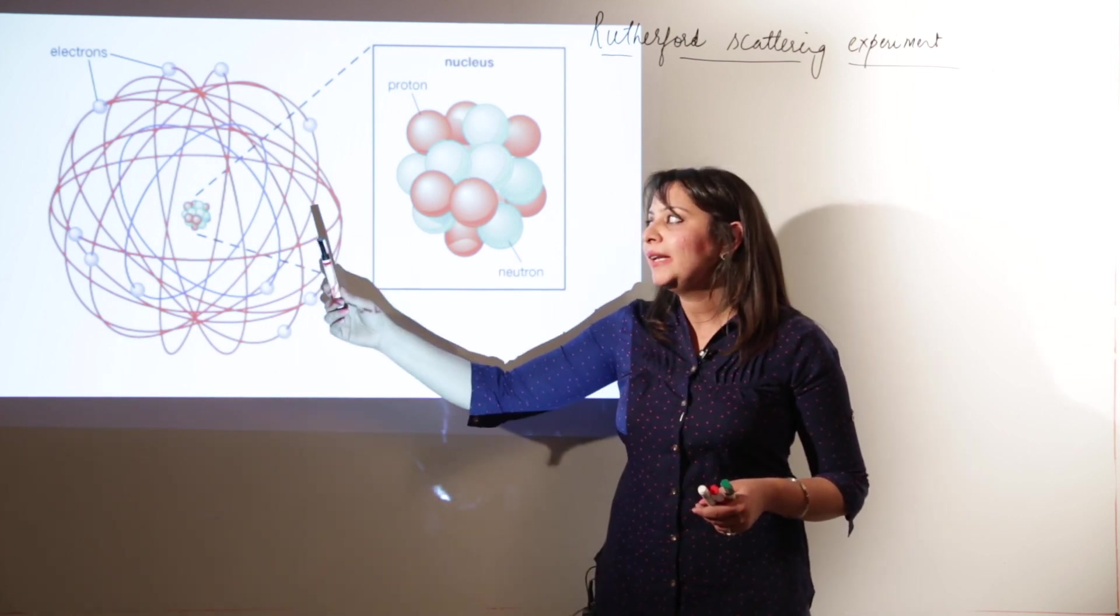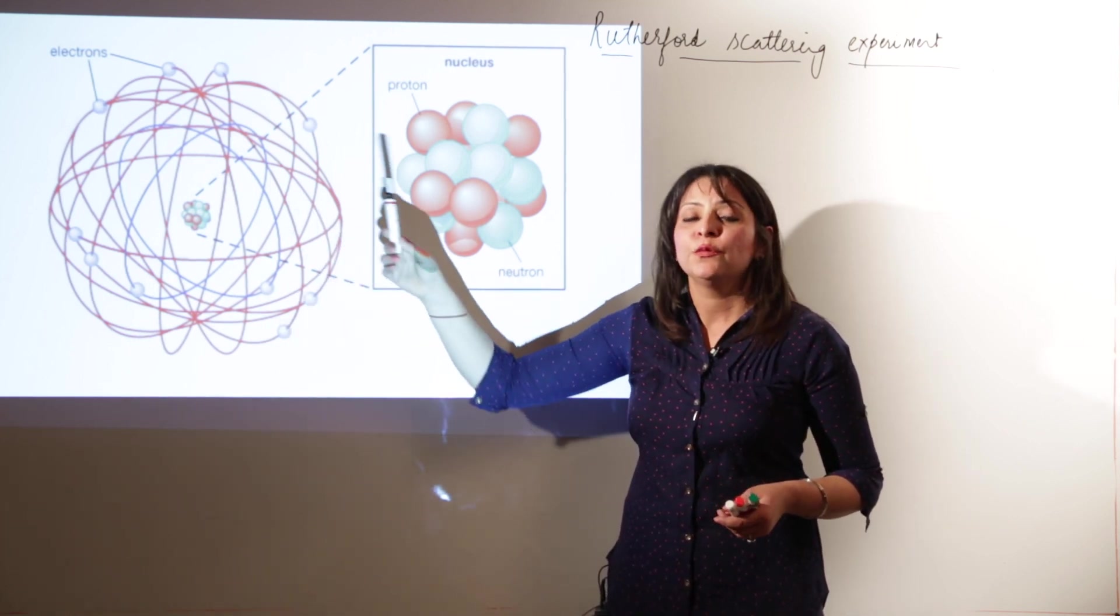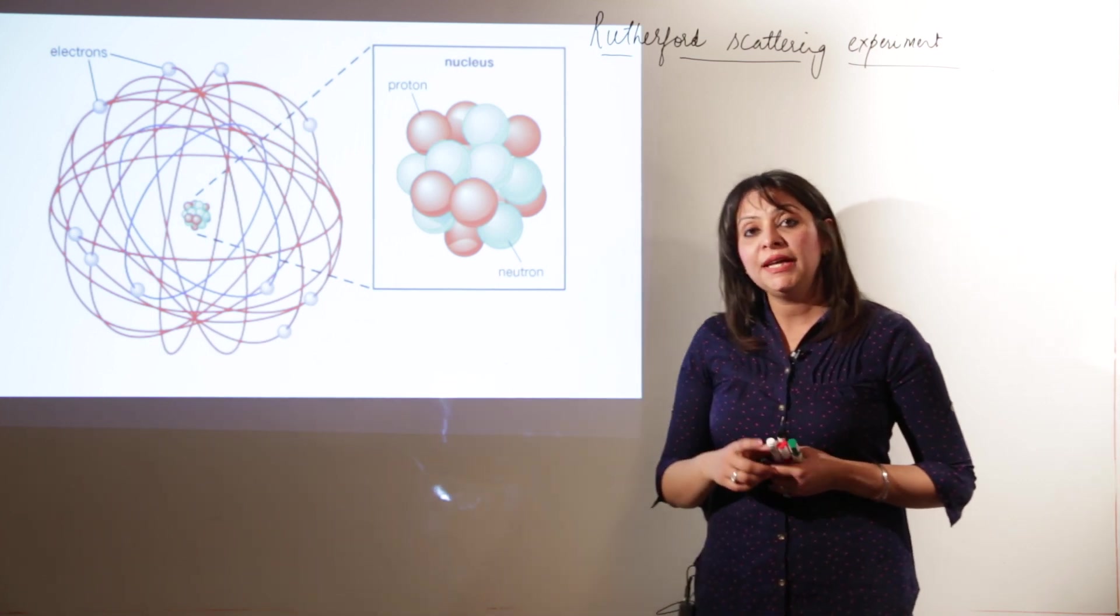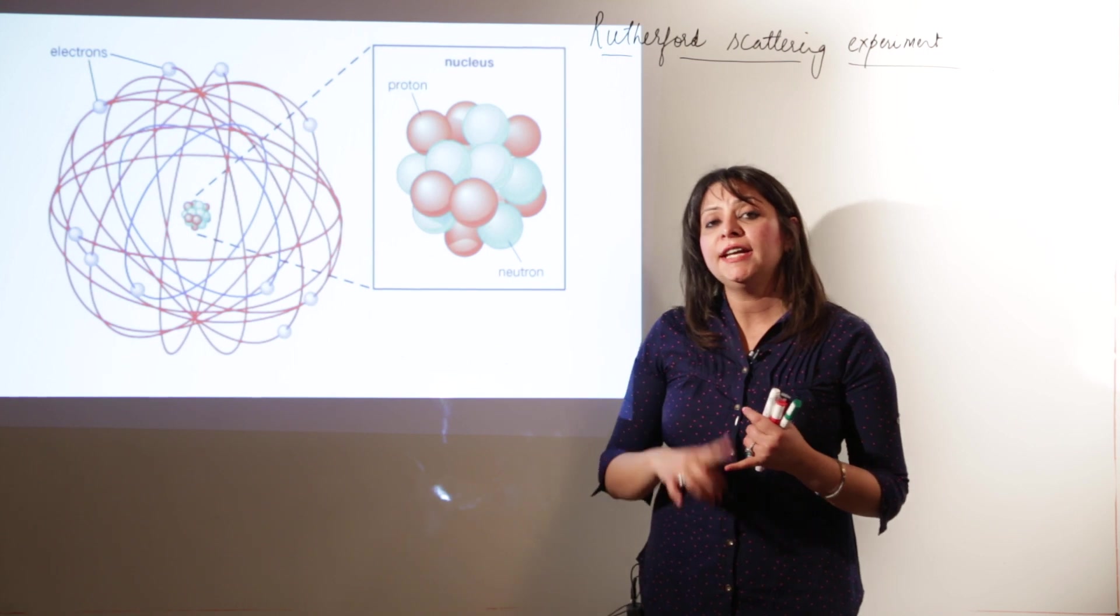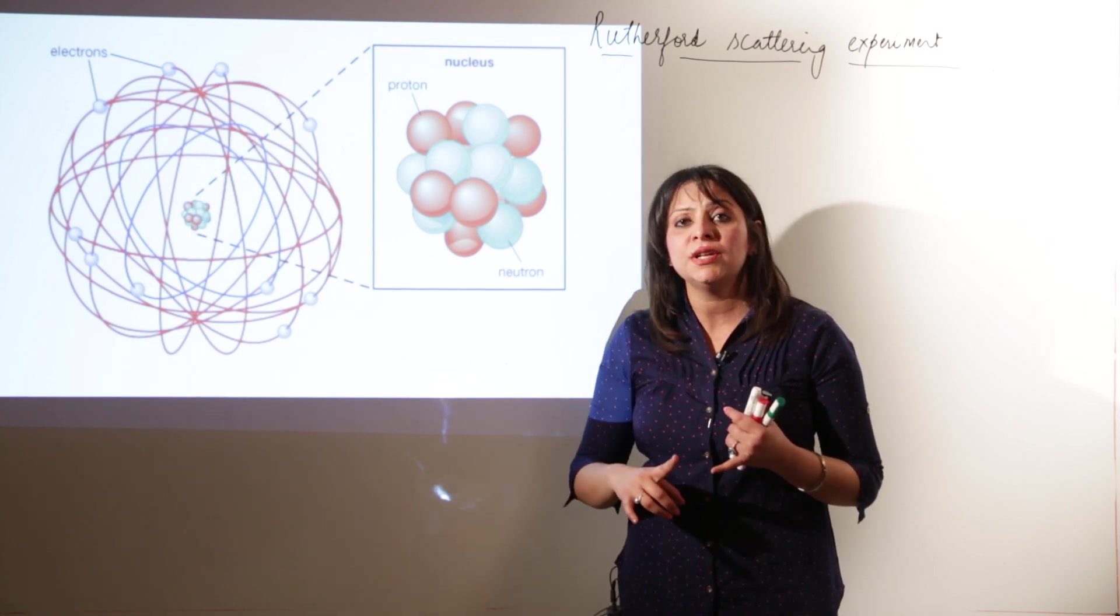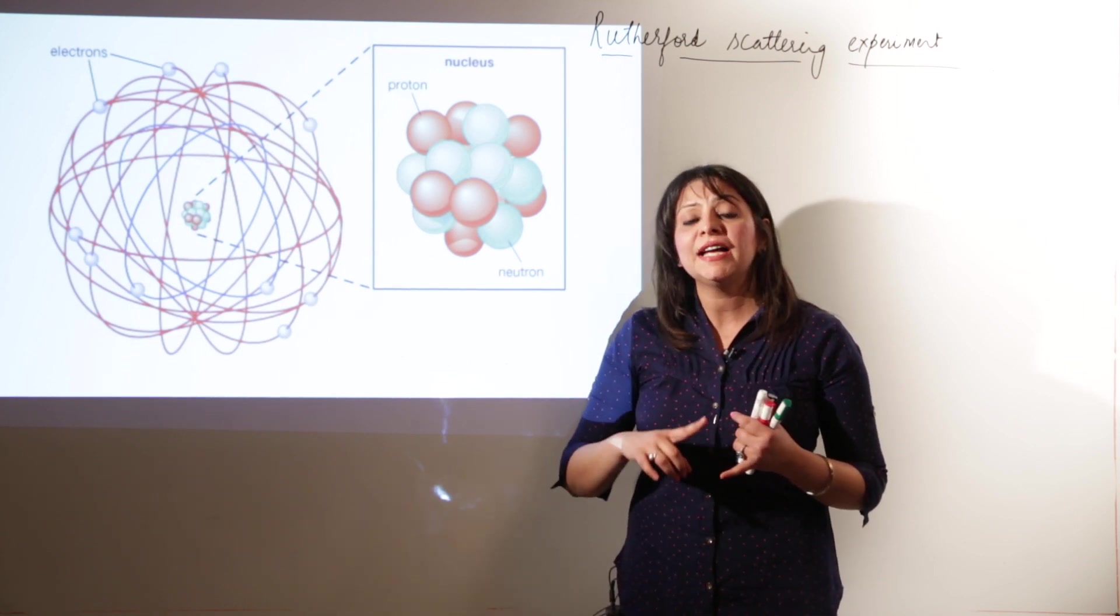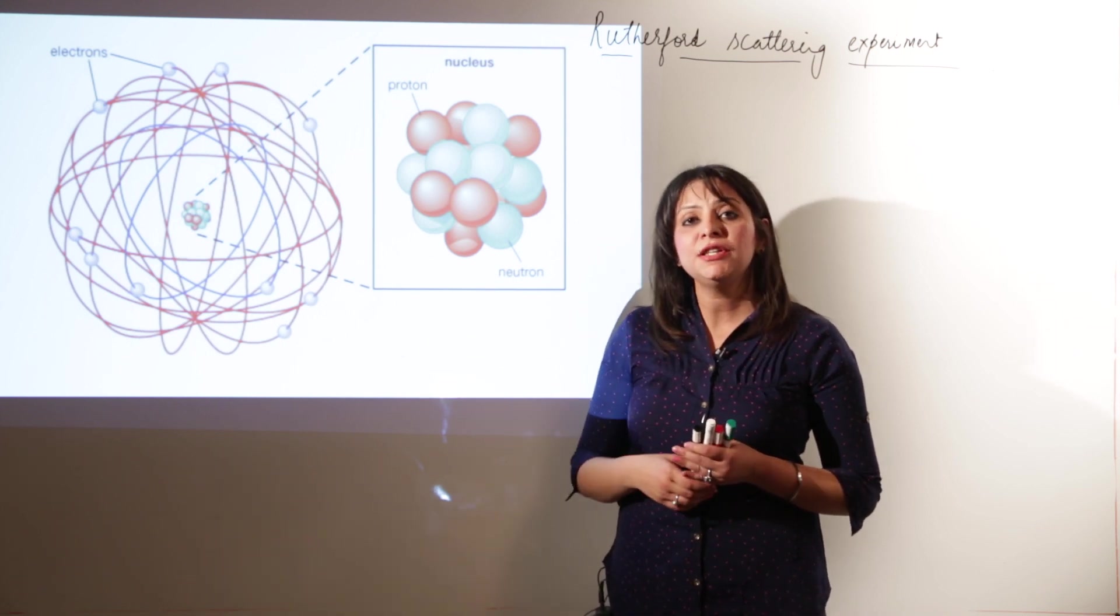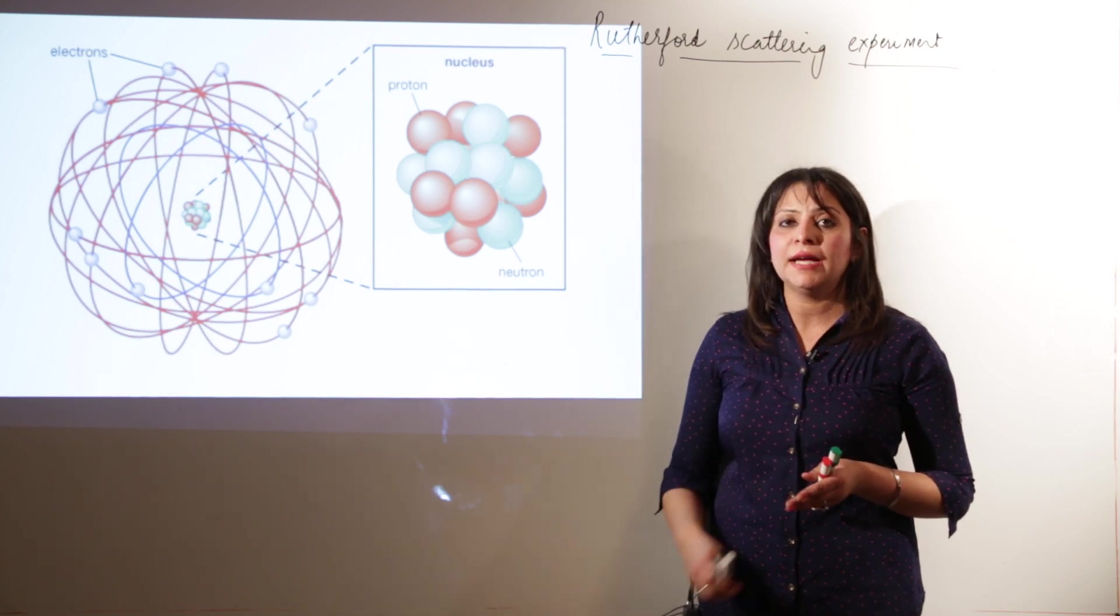Nuclear part, which is the nucleus, and extra nuclear part, which comprises of electrons moving at very high speed. I repeat, he said the electrons, the negatively charged particles, are not stationary. They are revolving at very high speeds. This is how Rutherford was able to explain the structure of atom.